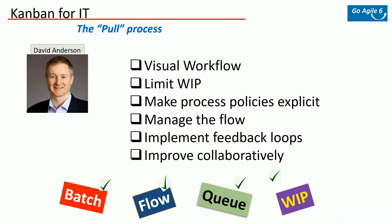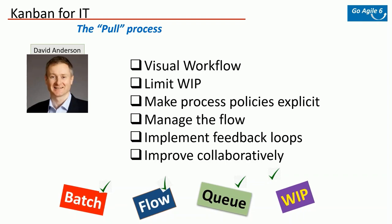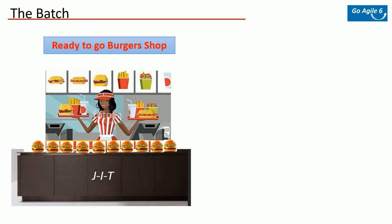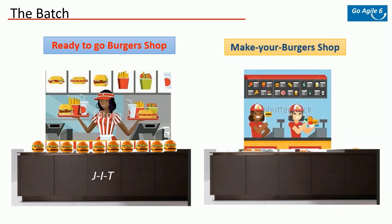If you observe carefully, a few things are becoming prominent in the system: batch size, flow, queue, and work in progress. Let's try to understand these principles with some examples. There are two burger shops — one is a ready-to-go burger shop and the other is a custom burger shop. In the ready-to-go shop, based on historic analysis they figured a particular type of burger is most popular. They study that lots of people come at certain times — say 12 to 1 PM — so they create a number of those burgers and keep them ready just in time by 12. People walk in, pick a burger, pay, and go.